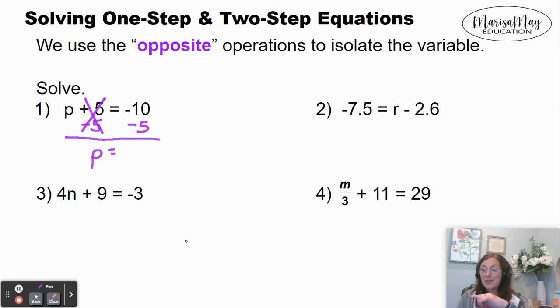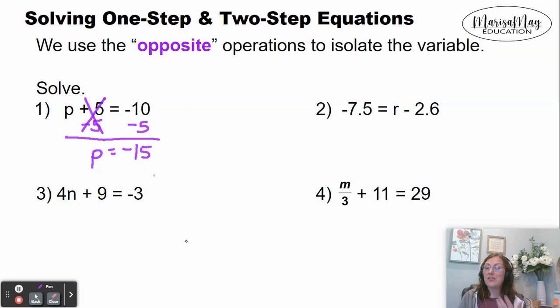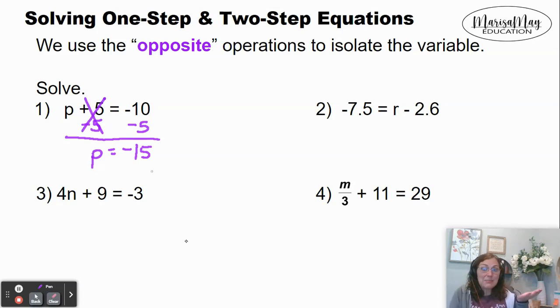Then we work on the other side: negative 10 minus 5. Feel free to use your calculator for that one if you need to — that gives us negative 15. That's my answer. That's all I had to do.